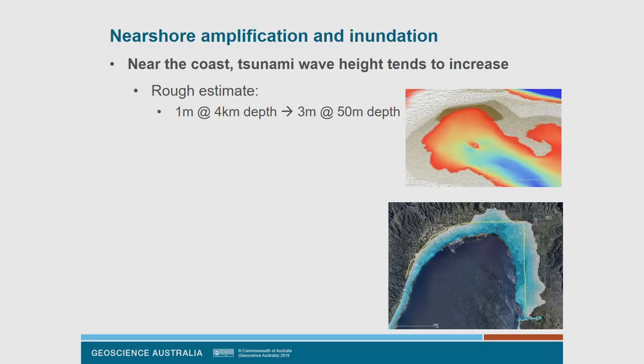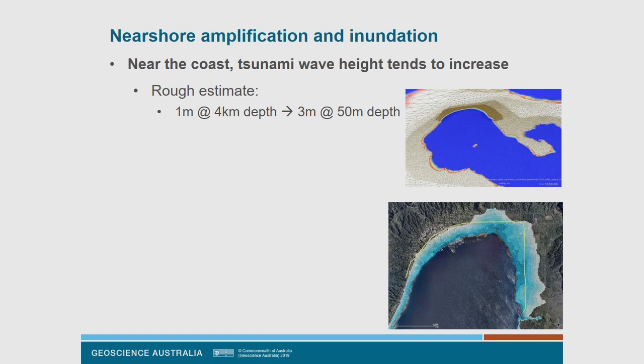The slip on the fault plane causes vertical displacement — typically uplift on the oceanic side and subsidence on the other side, which initiates the tsunami. Once you've got that uplift, it generates a wave which propagates throughout the ocean. Initially you have a fairly well-defined front, but because of interactions with topography and reflection off land, you end up with really complex wave trains that persist in the ocean for a couple of days. For the Japan 2011 event, the biggest waves in parts of New Zealand and Australia happened a day or two after the earthquake due to reflection from South America.